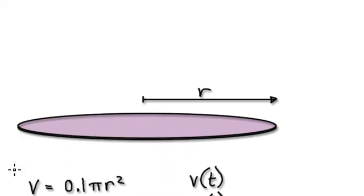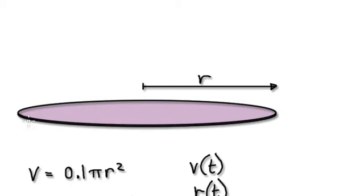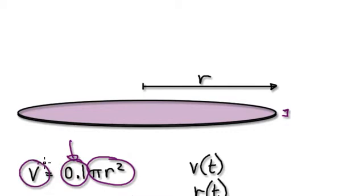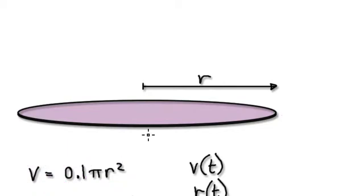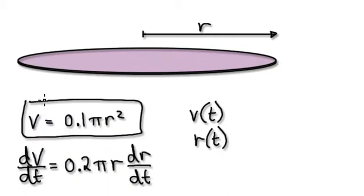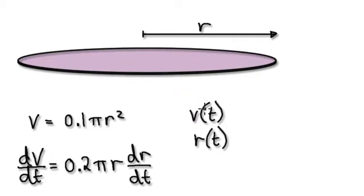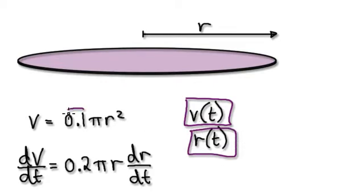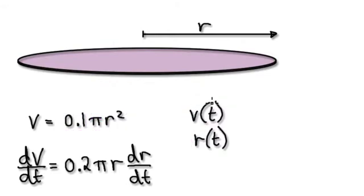To do this you need something to connect everything, and it's the volume that connects everything. The thickness is 0.1, so work out the area of the circle and multiply by the thickness — that gives you the volume of the oil. Bear in mind that volume is a function of time, and radius is also a function of time. Pi and the thickness are not functions of time.